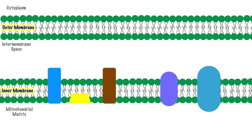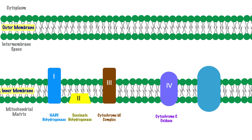Several enzymes are embedded within the inner membrane of the mitochondria. The first is Complex 1, or NADH dehydrogenase. The second is Complex 2, or succinate dehydrogenase. The third is Complex 3, or cytochrome BC. The fourth is Complex 4, or cytochrome C oxidase. And lastly, Complex 5, better known as ATP synthase. We also have coenzyme Q and cytochrome C, which both act as relay stations transporting electrons from one complex to another.